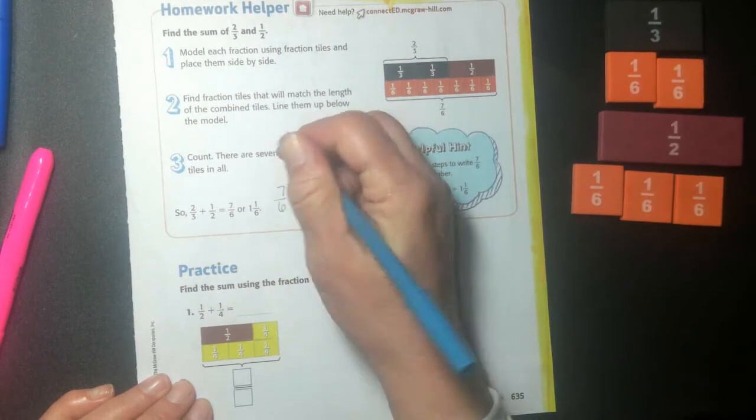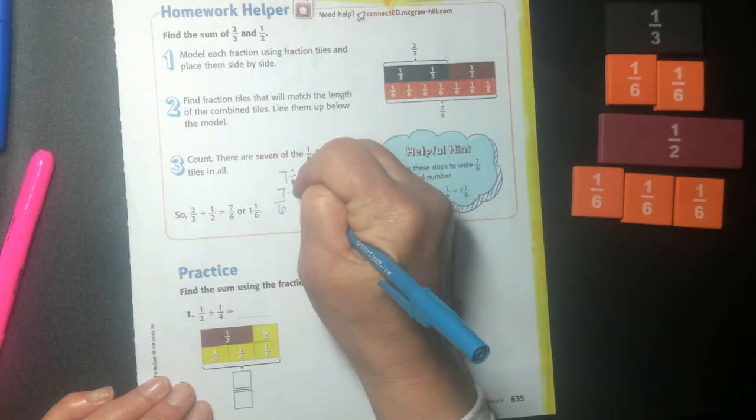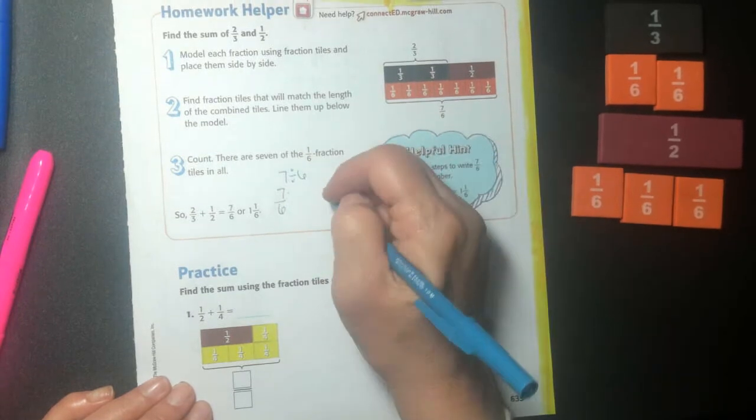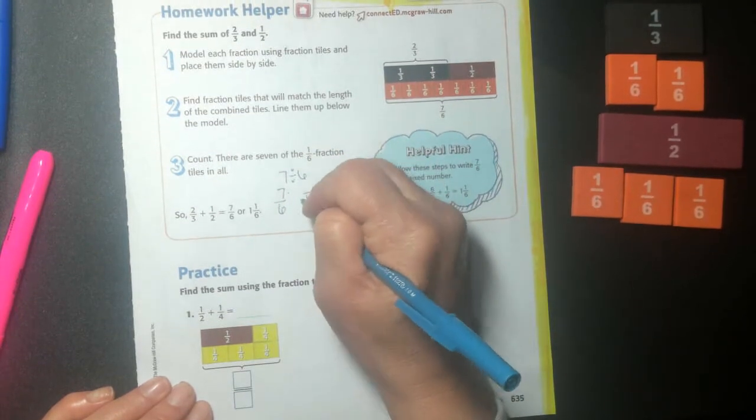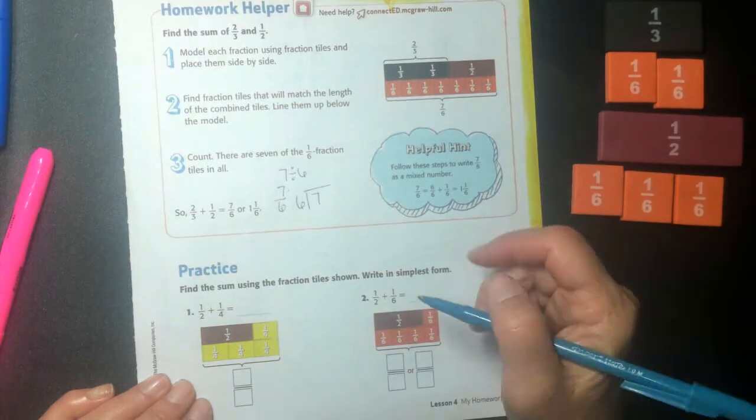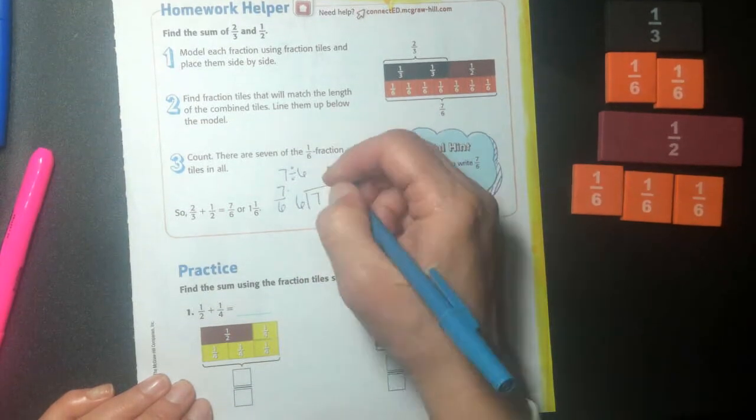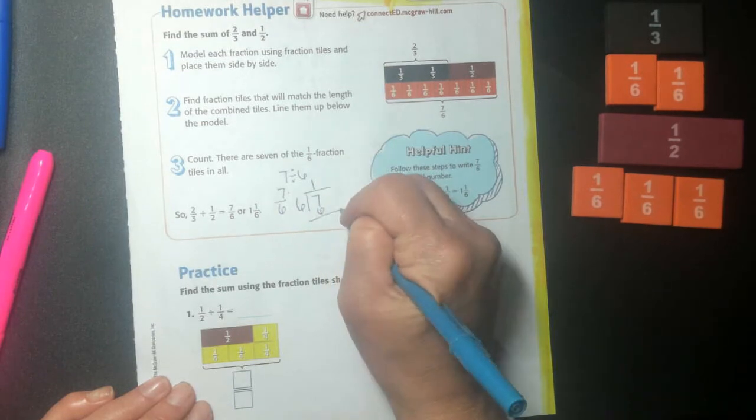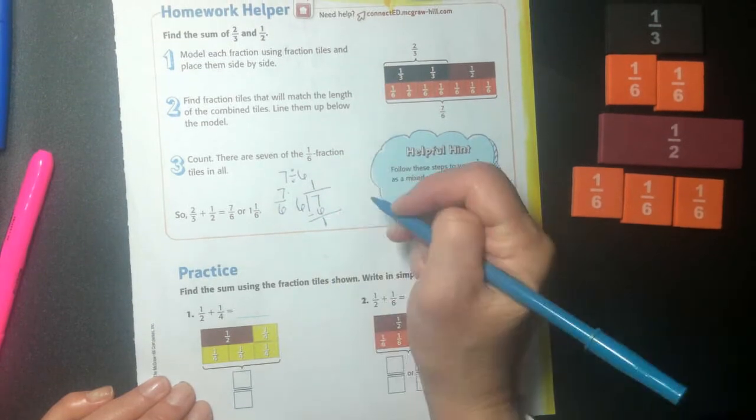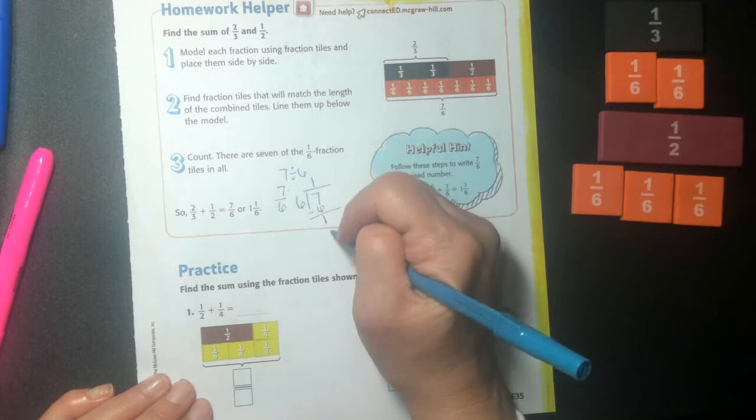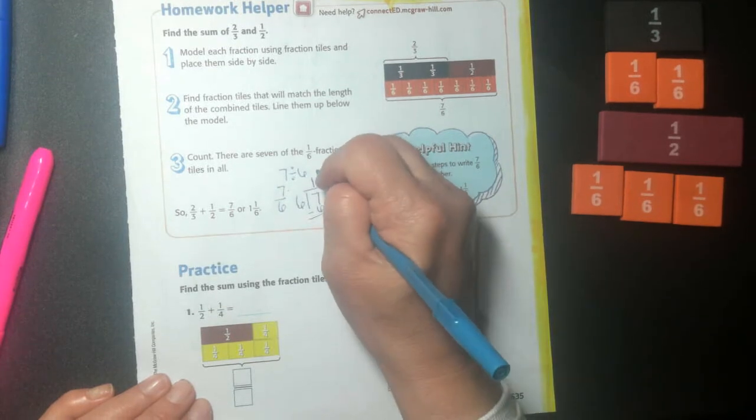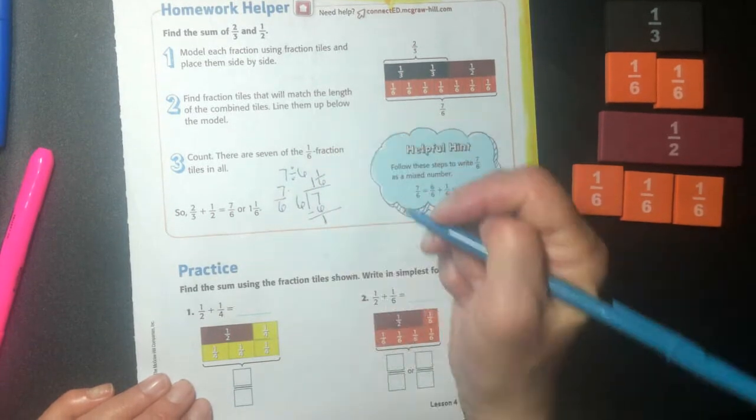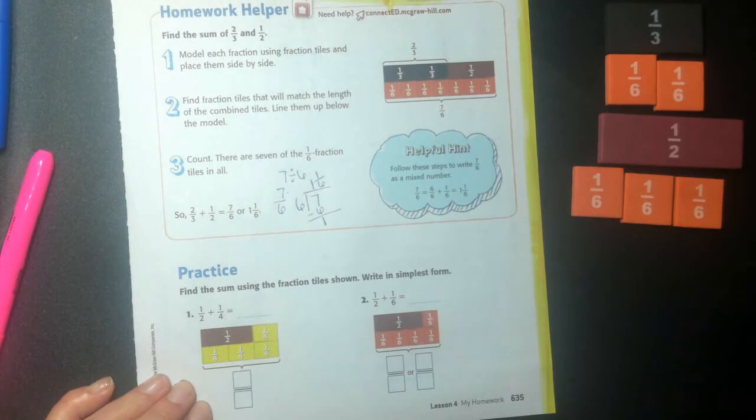Seven sixths means seven divided by six. So I'm going to say seven divided by six. Can six go into seven? Yes. One time. One times six is six. I subtract. Take away one. Right? I have one. So now I'm going to bring my one up and put my six underneath it. And I have one and one sixth.